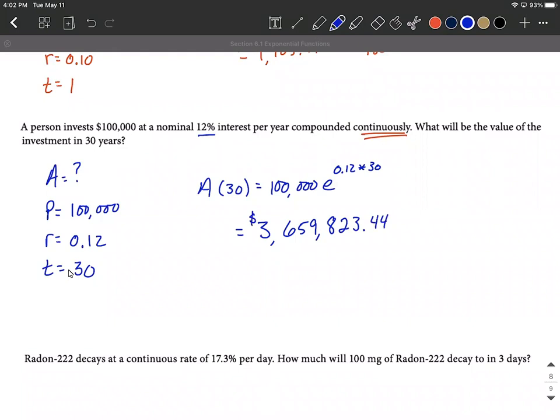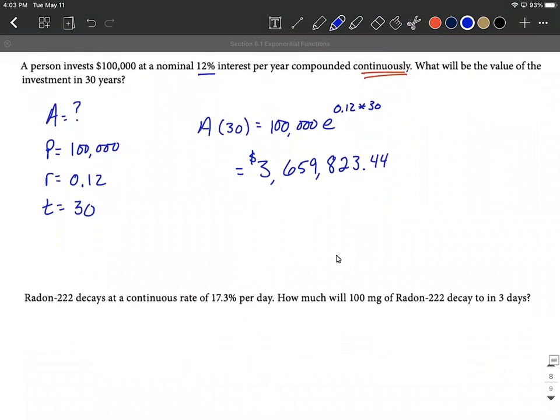So on this one, I got this investment to be $3,659,823.44. So if you look back at our previous example, on a previous video where we invested $100,000 at the same rate for 30 years, but it was compounded weekly, we end up making a little bit more money. Our investment is worth a little bit more when it's compounded continuously as opposed to compounded weekly.